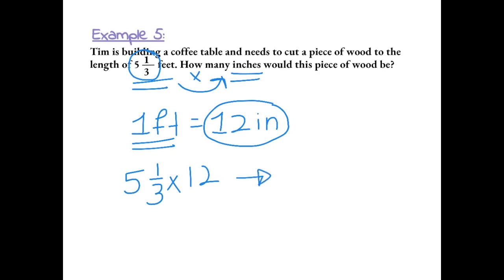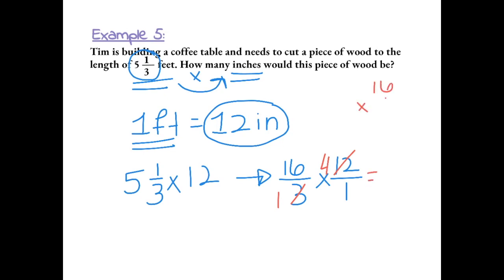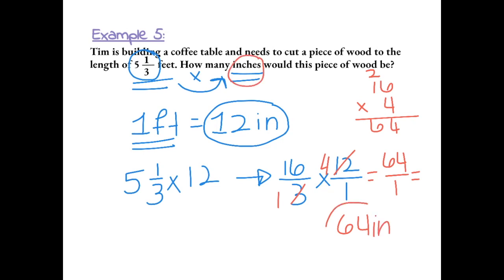First, we rewrite five and one-third as 16 over 3, then write 12 as 12 over 1, and cross-simplify: 3 becomes 1 and 12 becomes 4. Now we have 16 times 4 over 1 times 1, which gives us 64 over 1, which is just 64. So the piece of wood would be 64 inches.